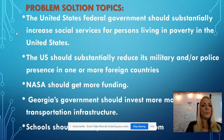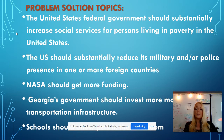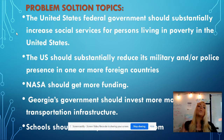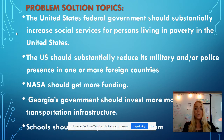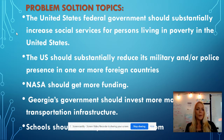Here are some examples of problem-solution topics. 'The United States federal government should substantially increase social services for persons living in poverty in the United States' — that's a very specific national topic. 'The U.S. should substantially reduce its military and/or police presence in one or more foreign countries' — that's a global topic, but the actor, the one doing the problem-solving, is the United States. In problem-solution essays you have to name who is going to fix the problem. If you're finding yourself unable to find an actor, your topic may be too broad — either narrow it down, or maybe you're actually looking at an argumentative topic.